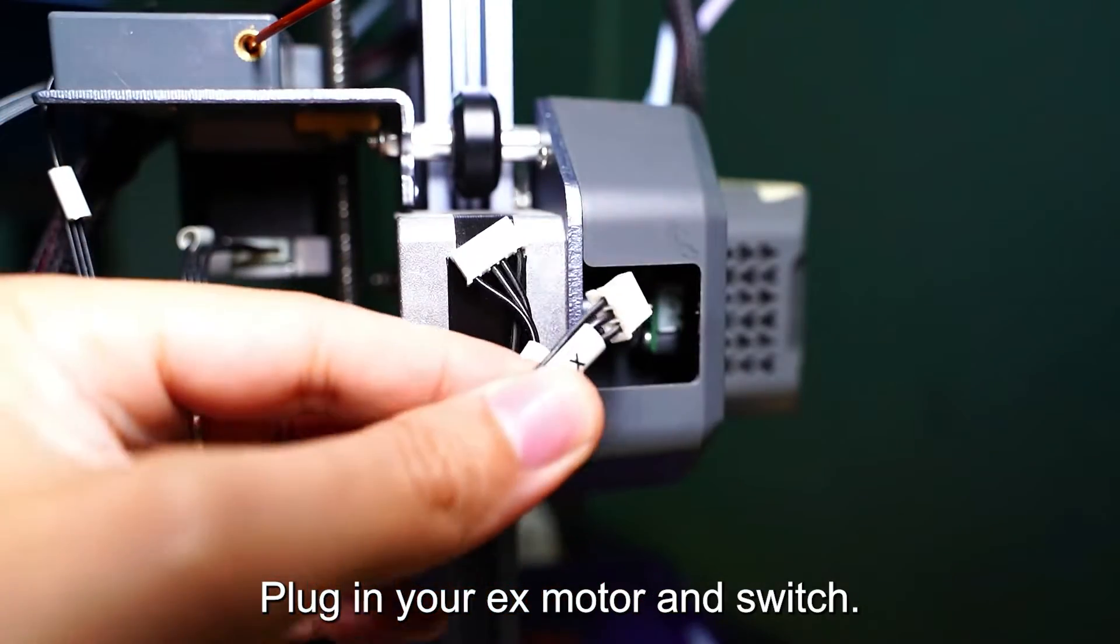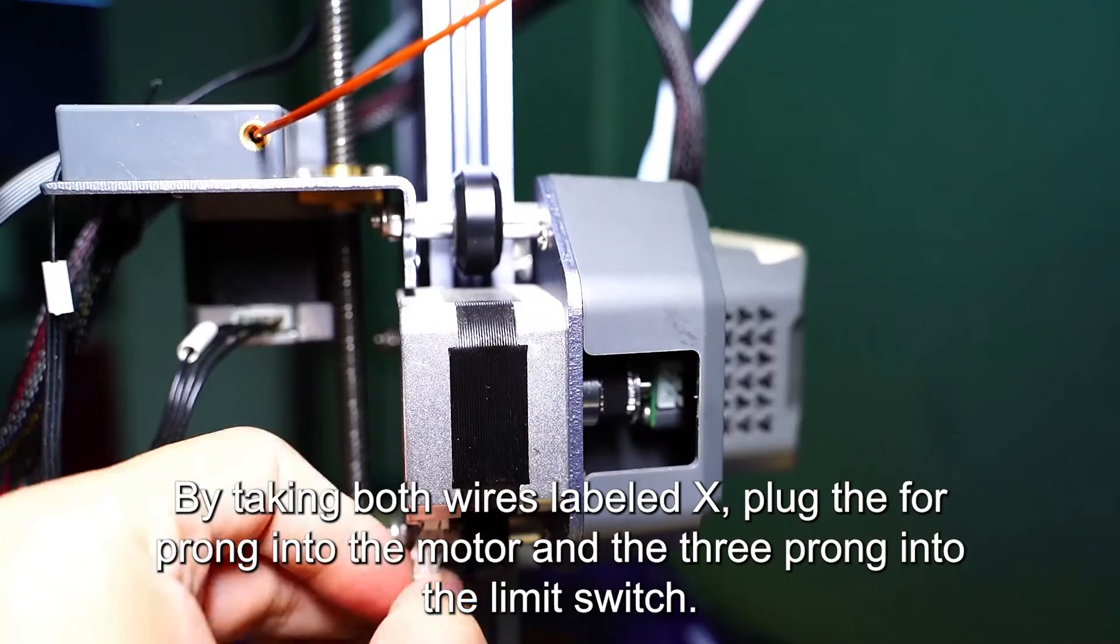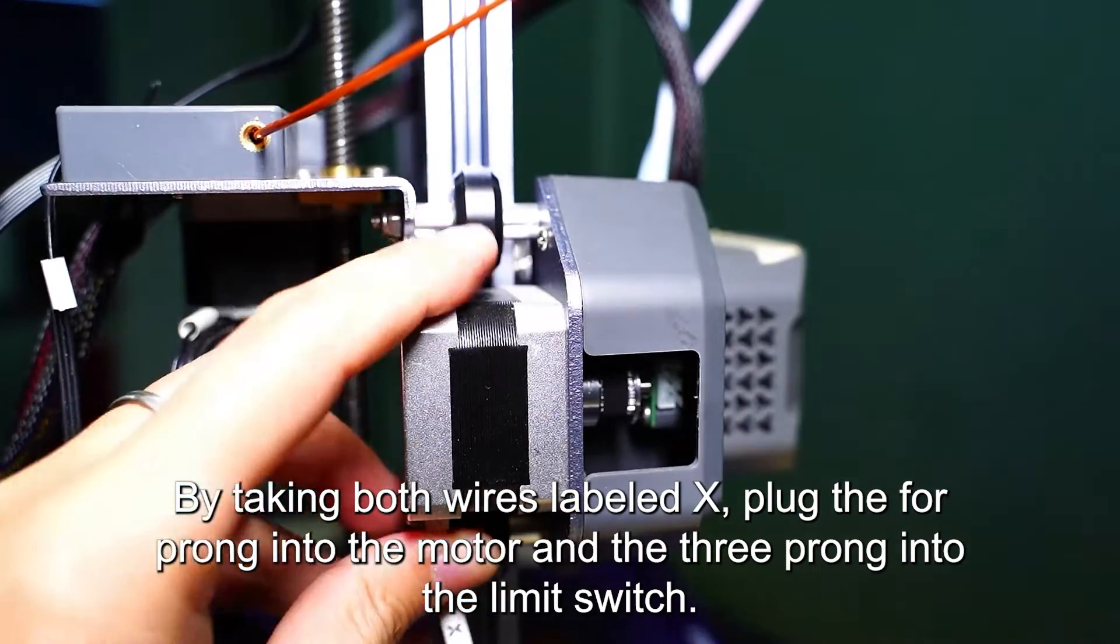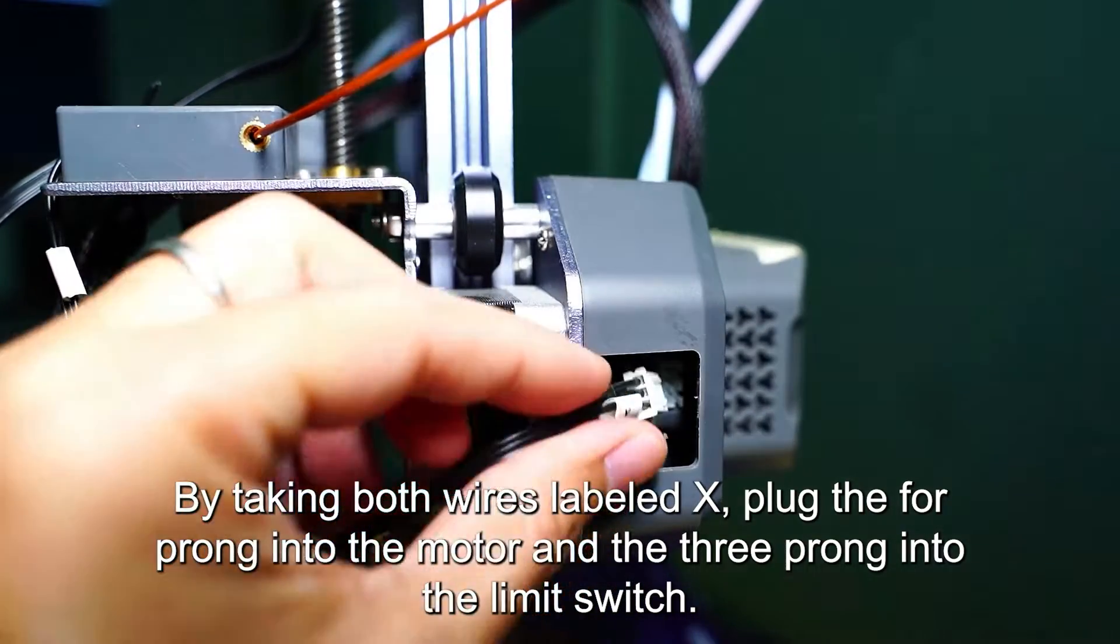Plug in your X motor and switch by taking both wires labeled X. Plug the four prong into the motor and the three prong into the limit switch.